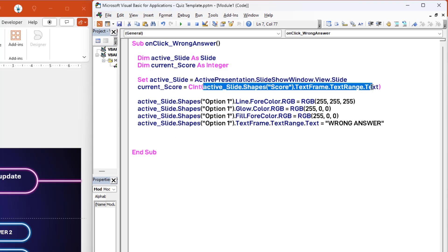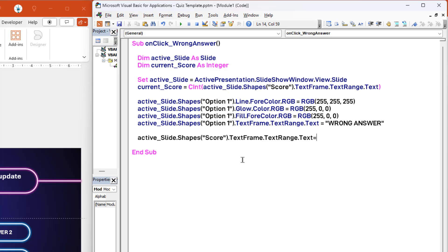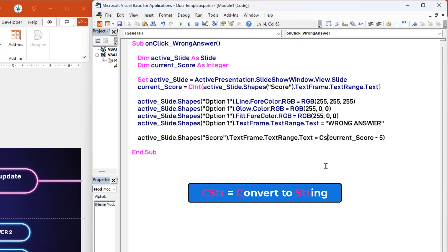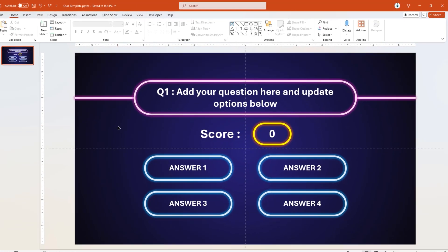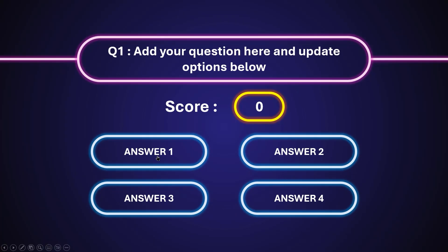Now we need to update the same text reference with the new value by subtracting the current value by 5. Again, we have the same problem — we need to update the score shape with text, but the subtracted value will be an integer. So we use another function named cstr to convert this integer value into a string and then update it to the score shape. Now let's maximize PowerPoint, put the presentation in slideshow mode and then click on option 1 shape. We can see all 4 changes are successfully done and even the score gets updated as minus 5. That's perfect.